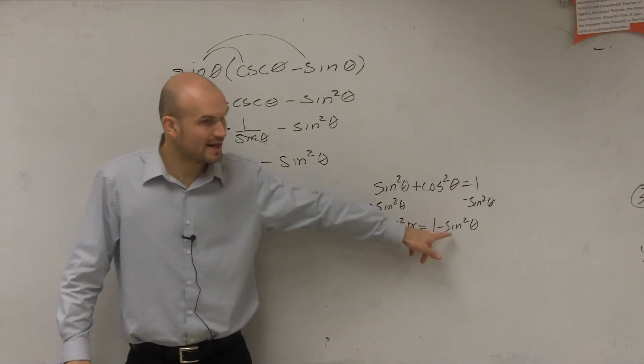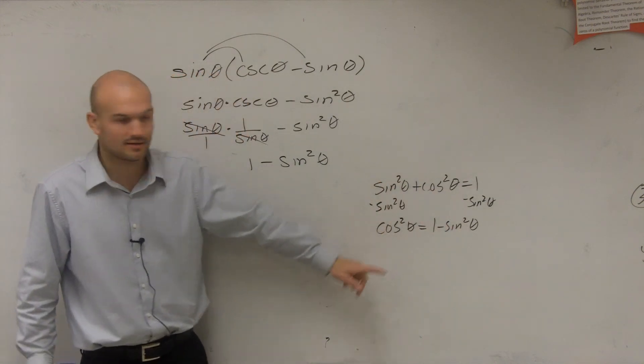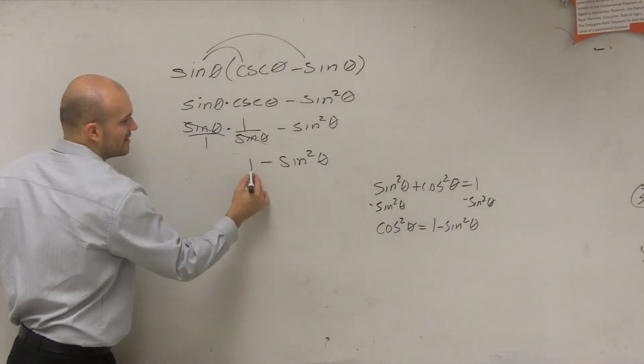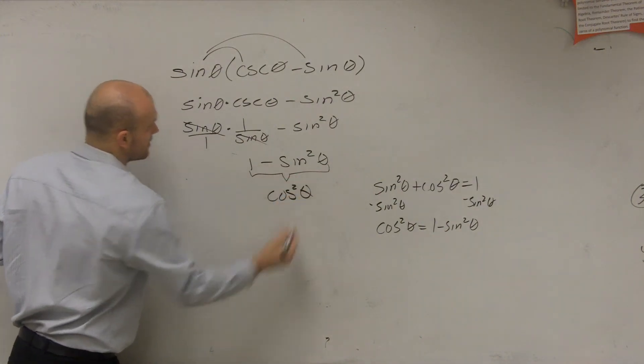So now that I know that 1 minus sine squared of theta is equal to cosine squared of theta, therefore I can simplify this just to cosine squared of theta.